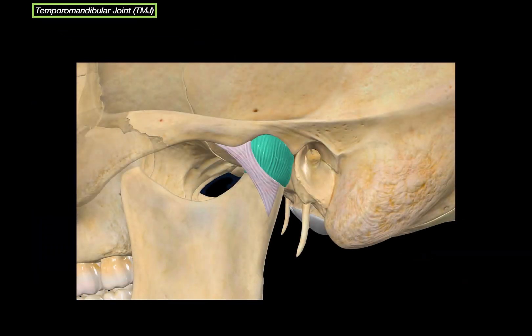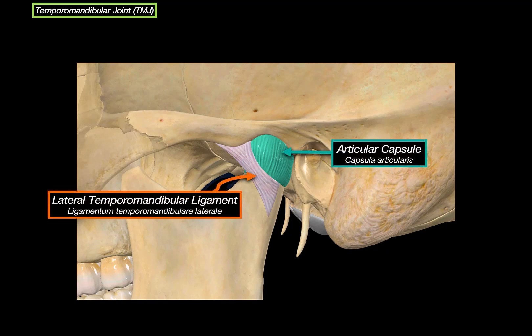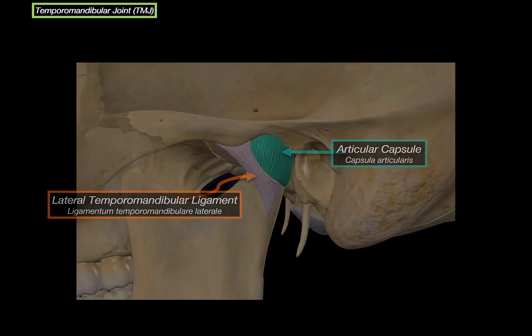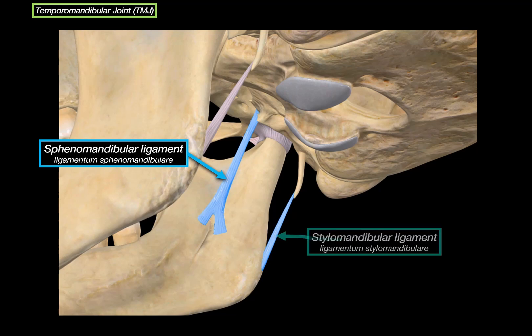There are several ligaments that support the movement of this joint. The main supporting ligament is the lateral temporomandibular ligament, which reinforces the joint capsule and limits the posterior displacement of the mandible. We also have the sphenomandibular ligament, which connects the spine of the sphenoid bone to the mandible and acts as a passive support. And the stylomandibular ligament, which runs from the styloid process to the angle of the mandible and helps prevent excessive protrusion.